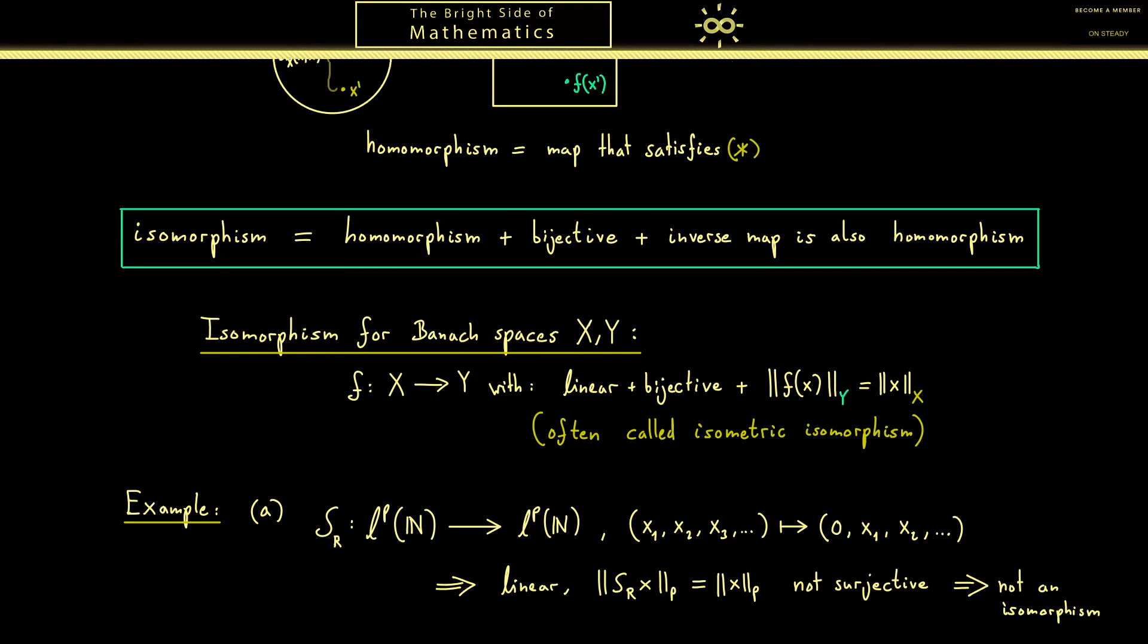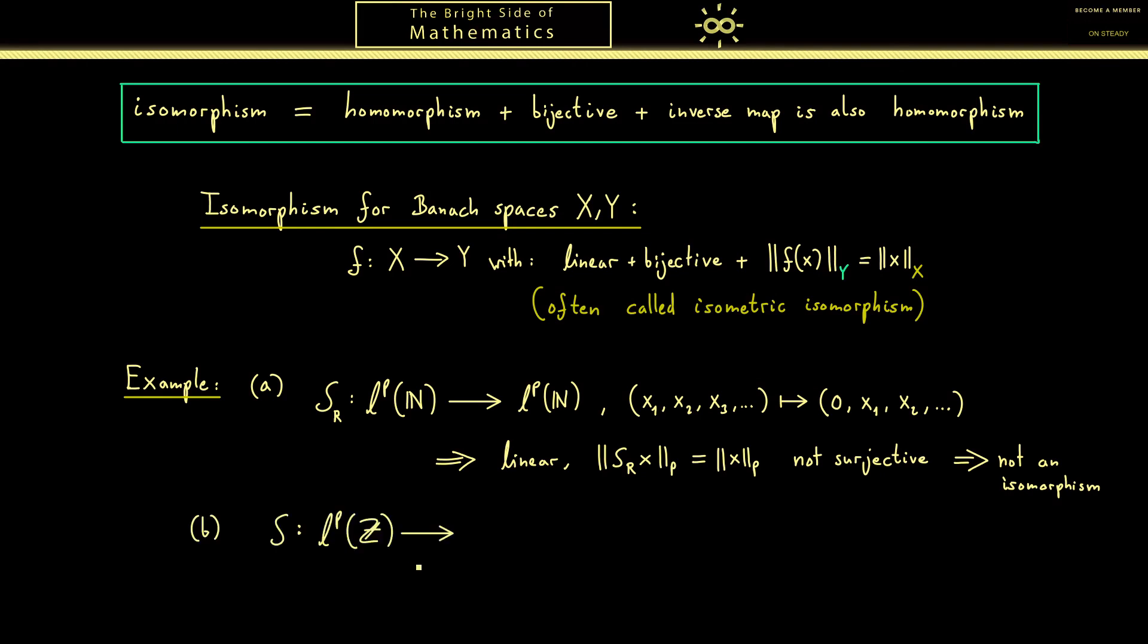For this reason let's change the example a little bit such that we get an isomorphism. Now the operator S should be similar but now I want the integers to be the index set. Of course everything works the same as in LP(N), the only difference is that the vectors we consider here are now functions from Z into F. Or in other words we have sequences that are two sided, that are going into both directions. Now to make it clear which index we consider I put the corresponding index just below. Okay, the operator should again be a right shift which means we find here x-2, x-1 here, x0 here and x1 here and so on.